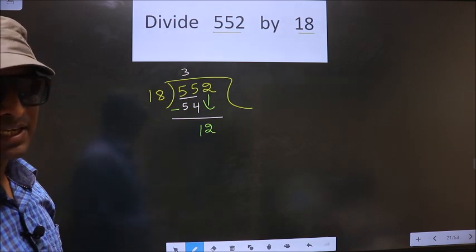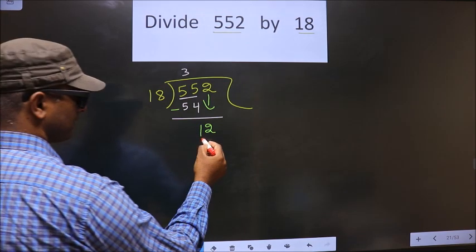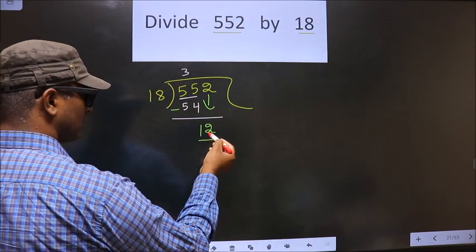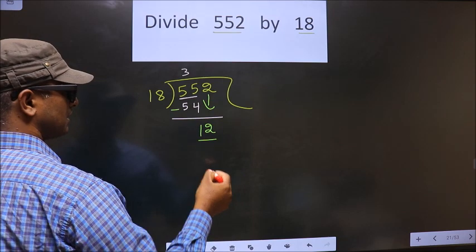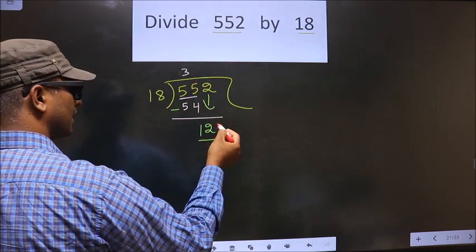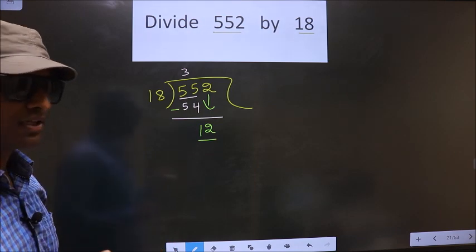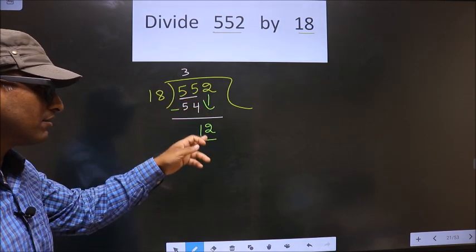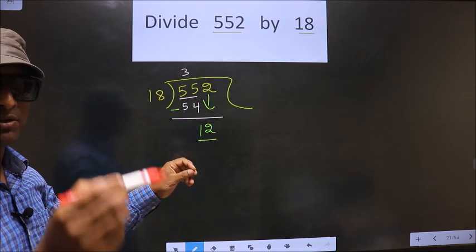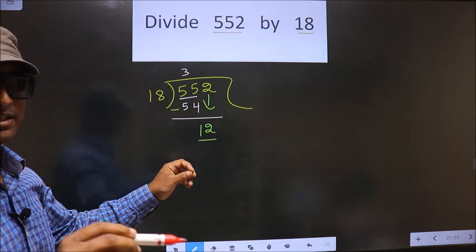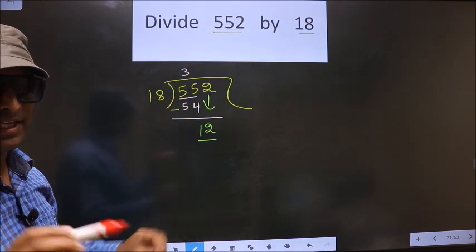This is where the mistake happens. And the mistake is this. Here we have the number 12. 12 is smaller than 18. So what many do is they put a dot here and take 0 here, which is wrong. Just now you have taken the number down, and in the same step you want to put dot and take 0. Both at the same step is wrong.